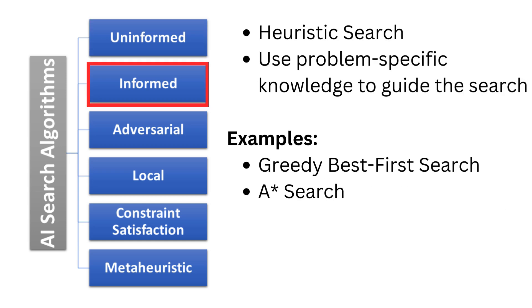Informed search algorithms use problem-specific knowledge called heuristics to guide the search towards the goal. This makes it faster and more efficient. Examples include greedy best-first search and A* search.